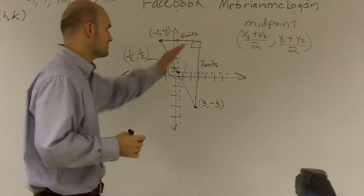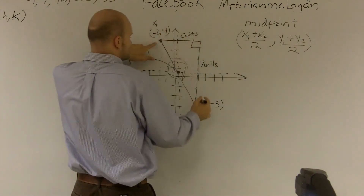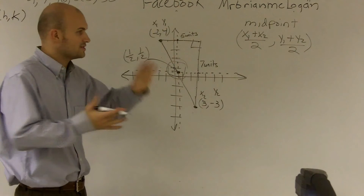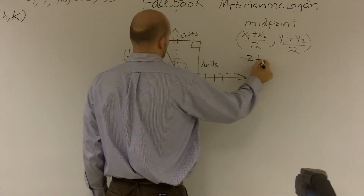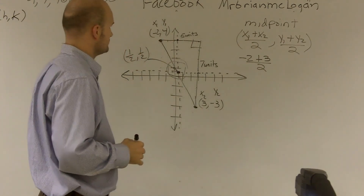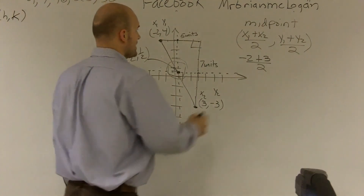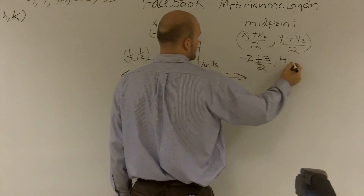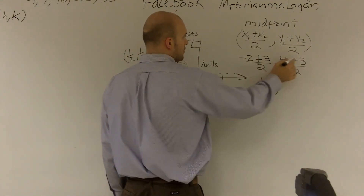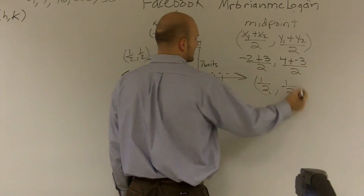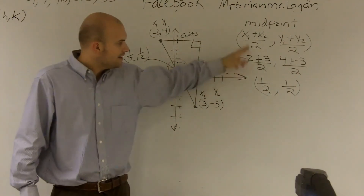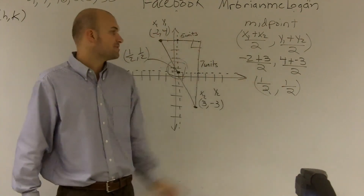To verify with the formula: x1 is negative two plus x2 which is three, divided by two, comma, y1 is four plus y2 which is negative three, divided by two. Negative two plus three is one, divided by two is one-half. Four plus negative three is one, divided by two is one-half. So the midpoint is one-half, one-half. We found it both ways — using the graph and using the midpoint formula.